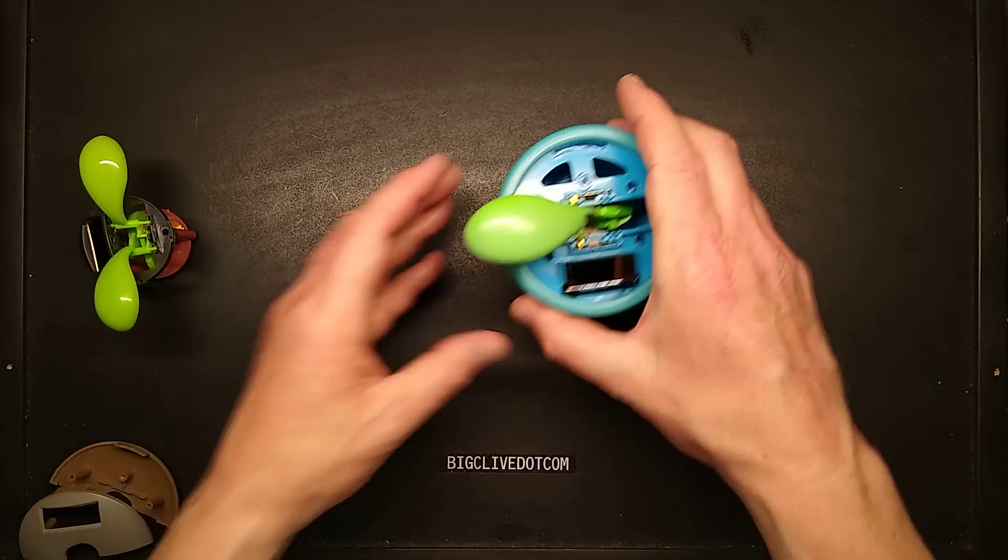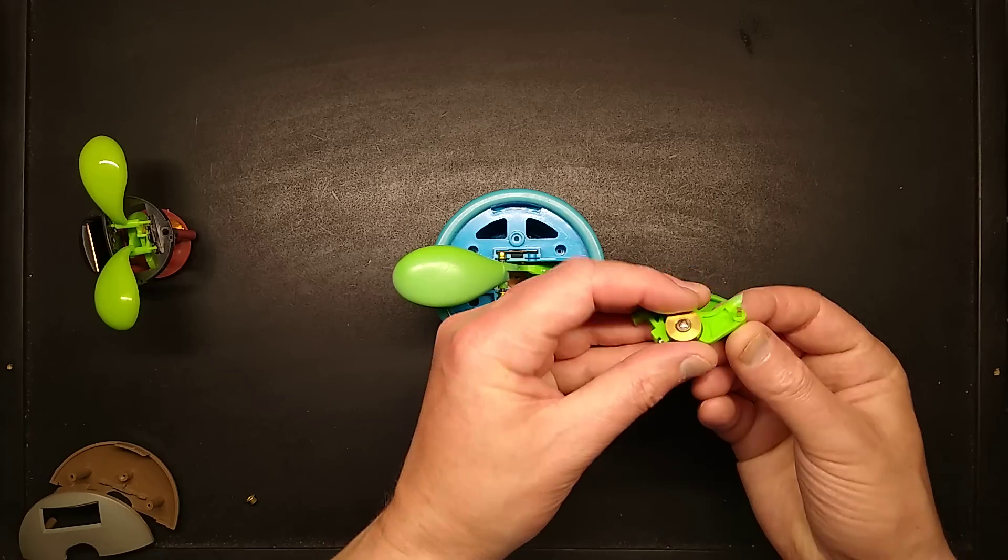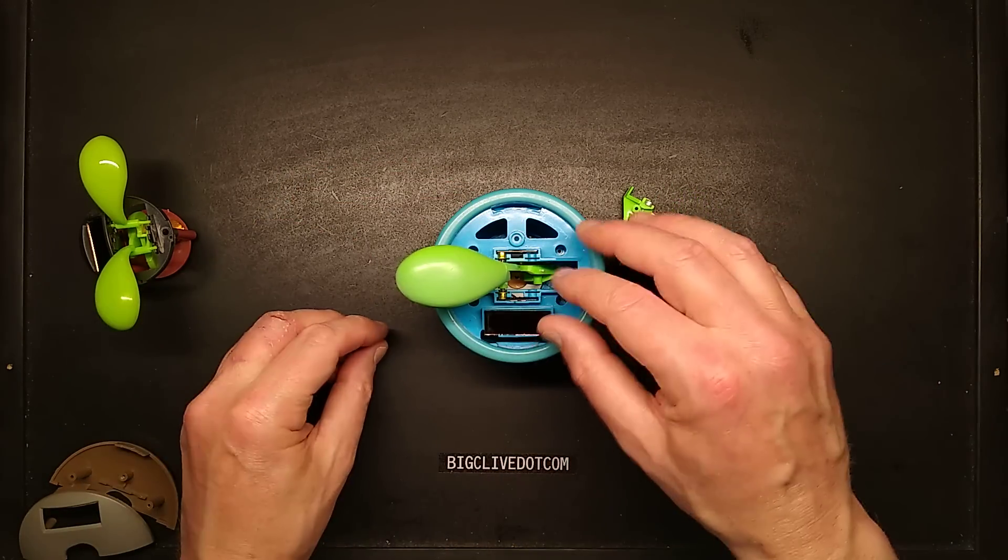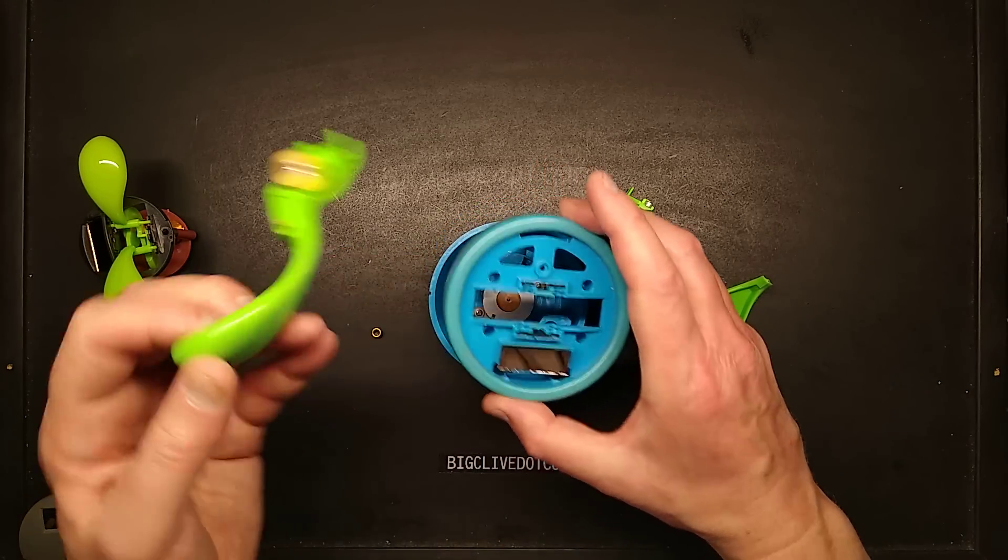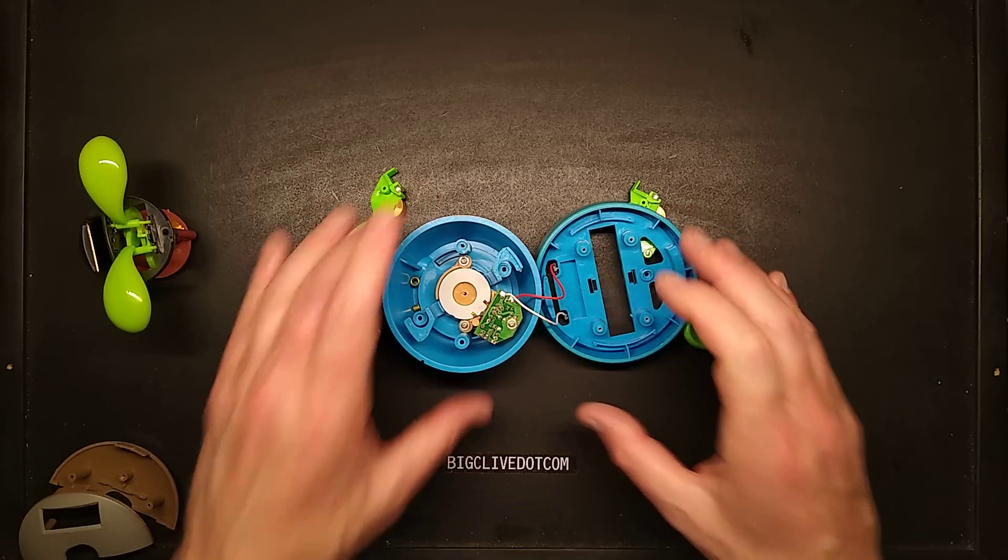This thing aside from the fact it's really good construction, it's got little counterbalance weights, little brass bearings for the flappy bits. The interesting thing is that when we go inside it's got a circuit board. Let's get this out, let's get a screwdriver.